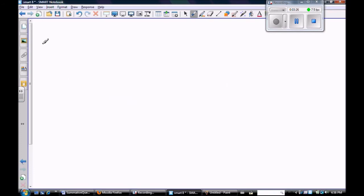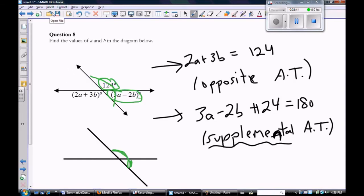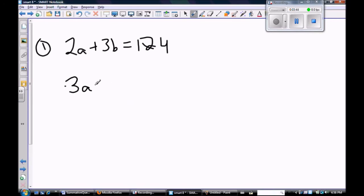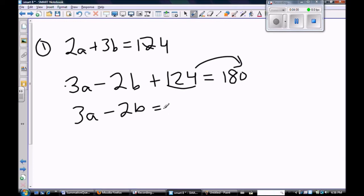So again, let me copy down my formulas. So I have 2a plus 3b equals 124, we'll call that equation number one. And then the other one said that 3a minus 2b plus 124 equals 180, and I'm going to rearrange it before I give it a name. Subtracting 124 from both sides I get 56, so that's what I'm going to call equation two. So again, two equations and two unknowns, and all I want to do is solve.